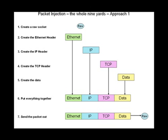The first step is creation of the raw socket itself. This is done via a socket call to PF_PACKET, SOCK_RAW, and then the protocol you want to add. In this approach, we first create the Ethernet header, then the IP header, then the TCP header, and then finally the data. We will look into how we create these individual headers a little later, but let's focus on the big picture now.